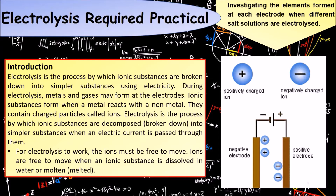During electrolysis, metals and gases may form at the electrodes. Ionic substances form when a metal reacts with a non-metal — they contain charged particles called ions. Electrolysis is a process by which ionic substances are decomposed into simpler substances when a current is passed through them, as the ions gain or lose charge. For electrolysis to work, the ions must be free to move, which occurs when an ionic substance is dissolved in water or melted.